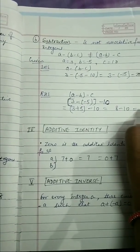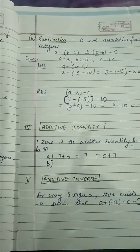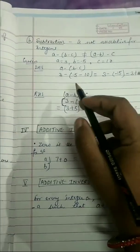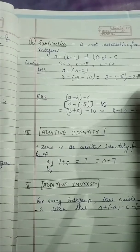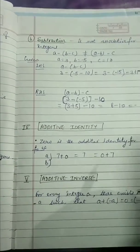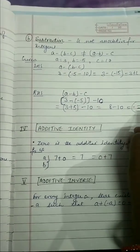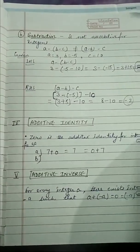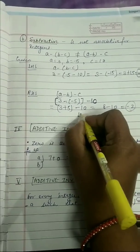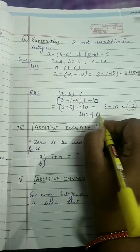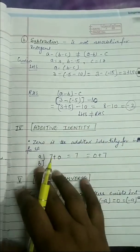It equals minus 2. So the value from the left-hand side is 18 and here it is minus 2. Both are different, so left-hand side is not equal to right-hand side. That's why we can see that subtraction is not associative.